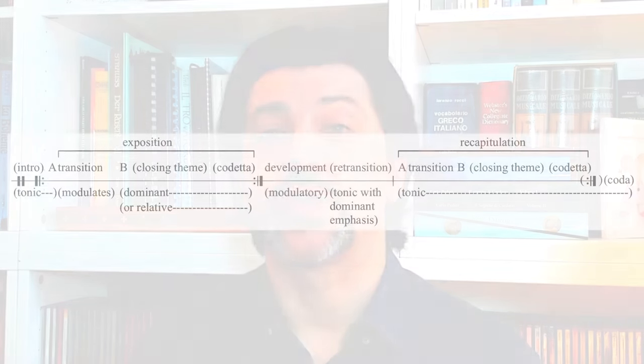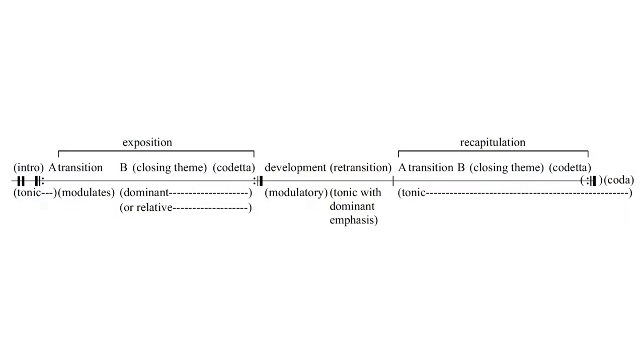While the incidental music written by Beethoven sums up to 10 numbers, the overture remains the most popular one to this day. It's written in sonata form, a form typical of classicism comprising an exposition with two contrasting themes, a development section where the musical material gets reworked in various ways, and a recapitulation. Everything is often framed by a slow introduction and a coda.